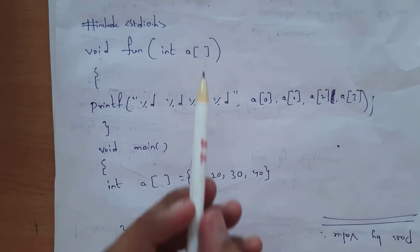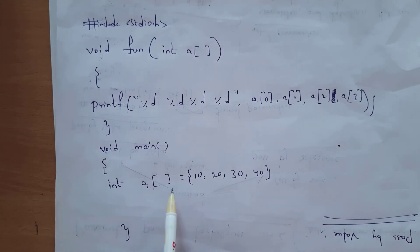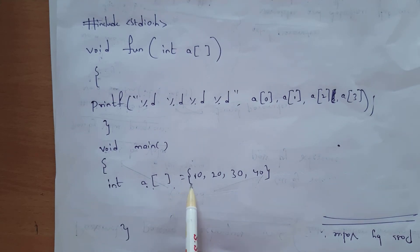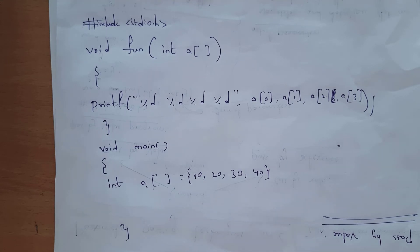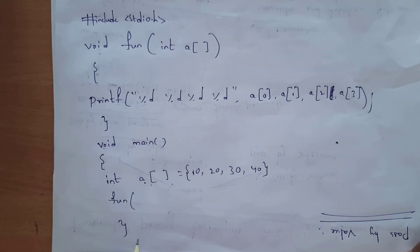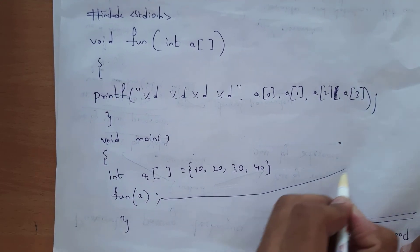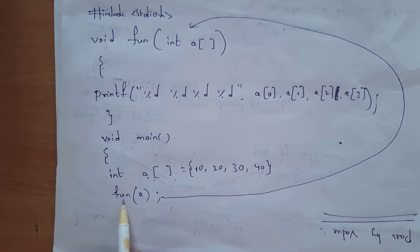Here is an example of passing an array as an argument to a function. Inside void main, I declare int a[] = {10, 20, 30, 40}, giving four values. I then call a function named fun and pass the array name a as the argument, writing fun(a).